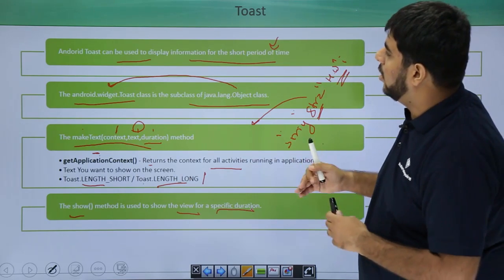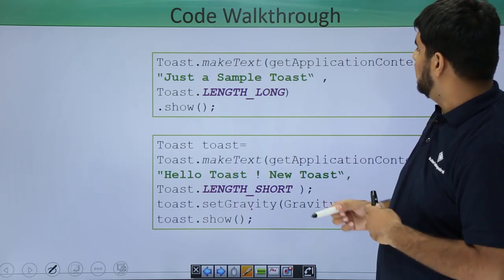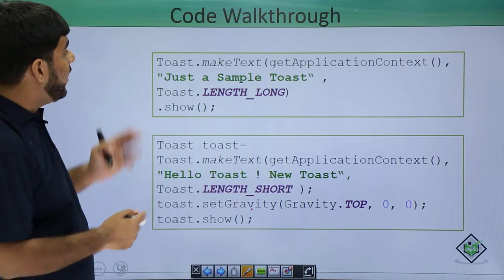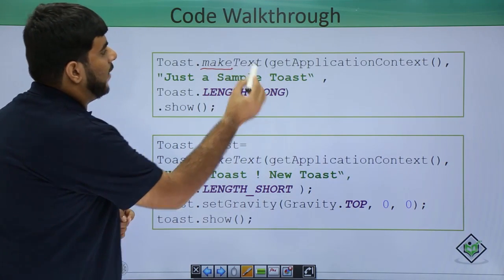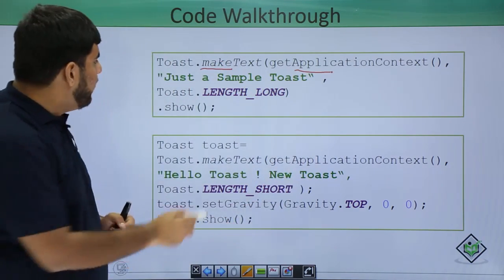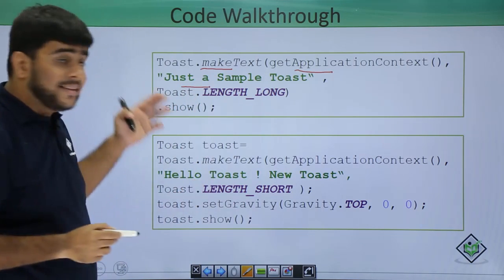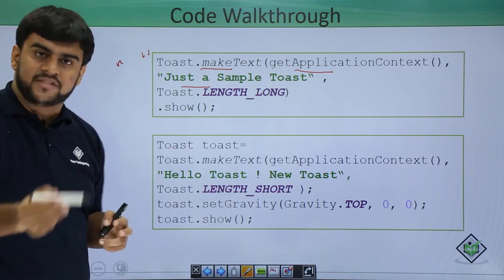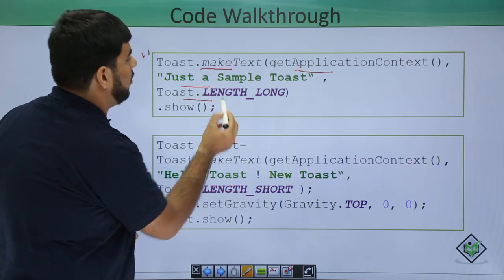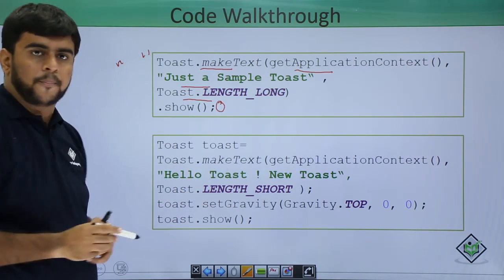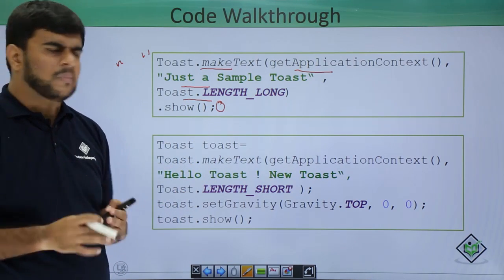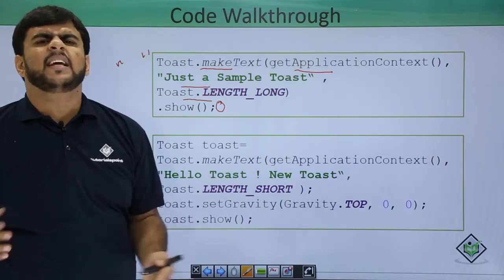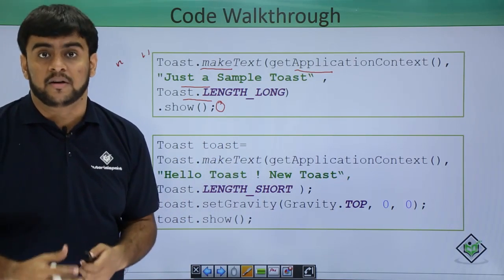Now, let's have a quick example wherein we can see the toast. This is a toast example wherein we have made a toast and we are making the text out of it. We are getting the context from the toast and passing some text. You can see that in this one, I am using a text in double quotes the way we pass strings in Java, and then I am giving the length as length_long and passing the show. So this is a normal toast, the toast which we can show very easily in a simple one liner.